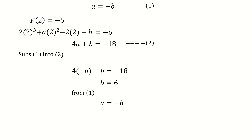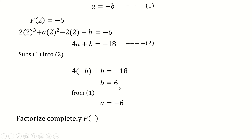Substituting b = 6 back into equation 1, where a = -b, we get a = -6. So the values are a = -6 and b = 6. Now we move on to factorizing p completely.